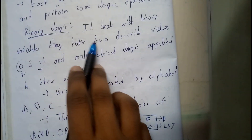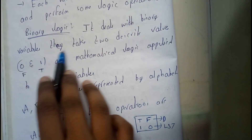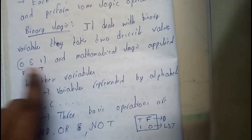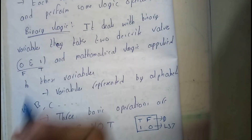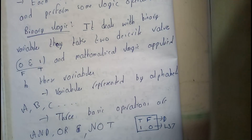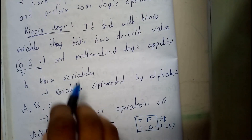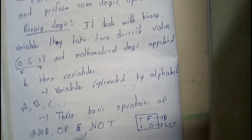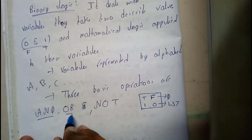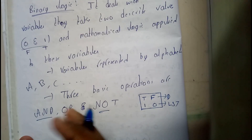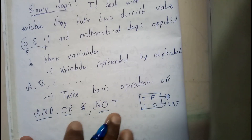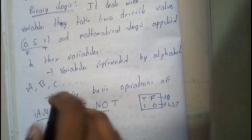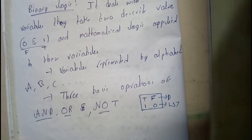Binary logic deals with binary variables that take two distinct values: 0 and 1. These are the two values used in mathematical logical applications. We have components like AND, OR, NOT, NAND, and more — we will be going through all of them. We will also be using variables like A, B, C, D, X, Y, Z, W, and so on.